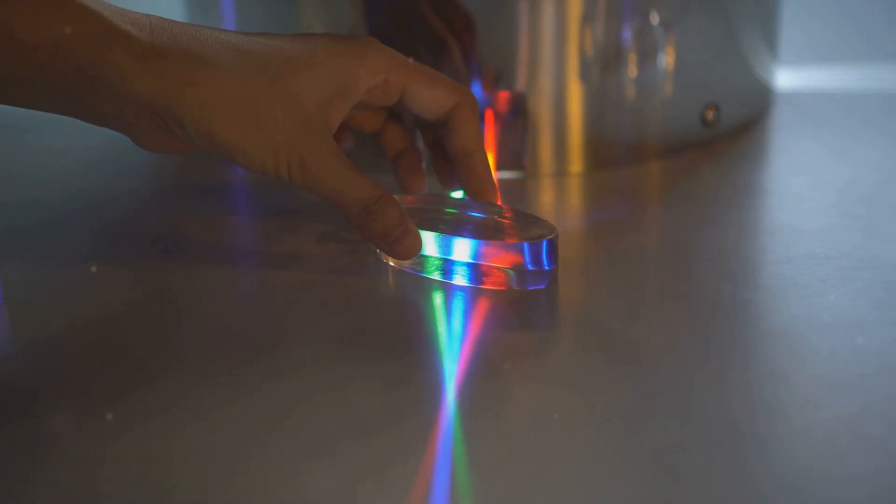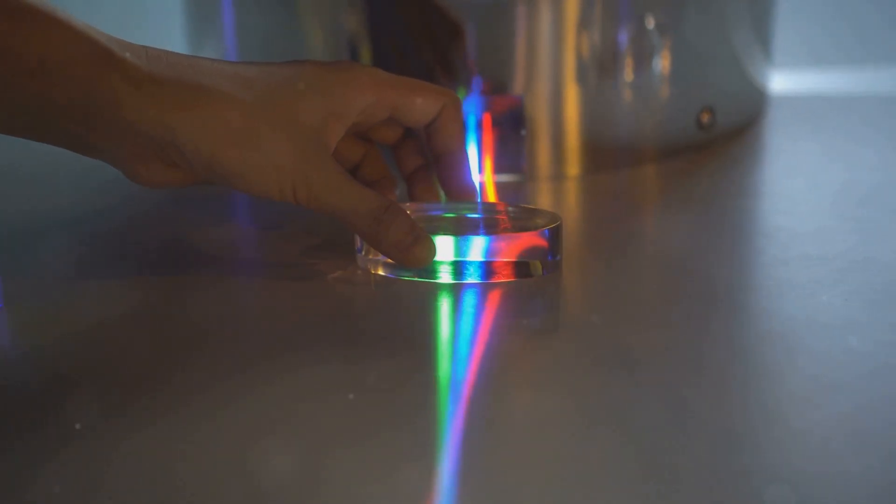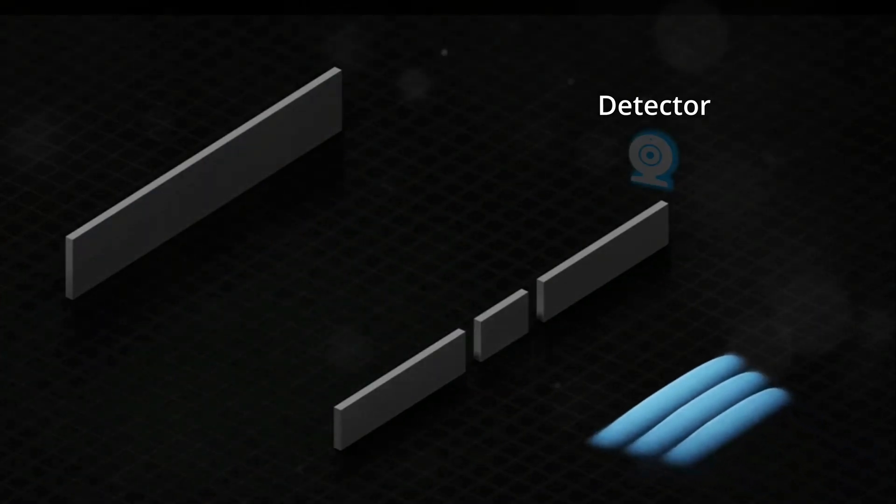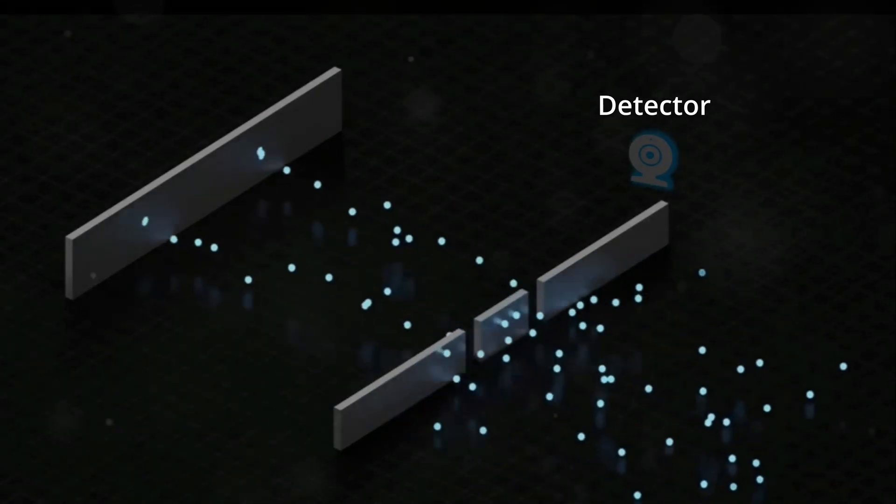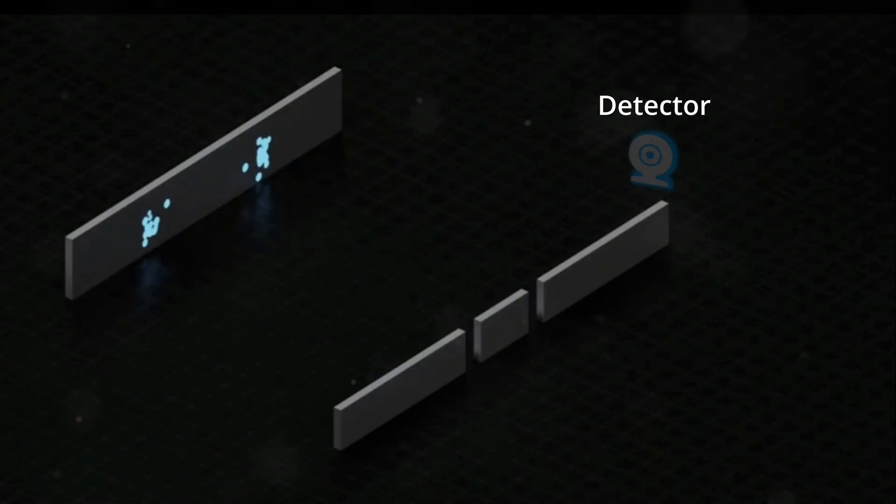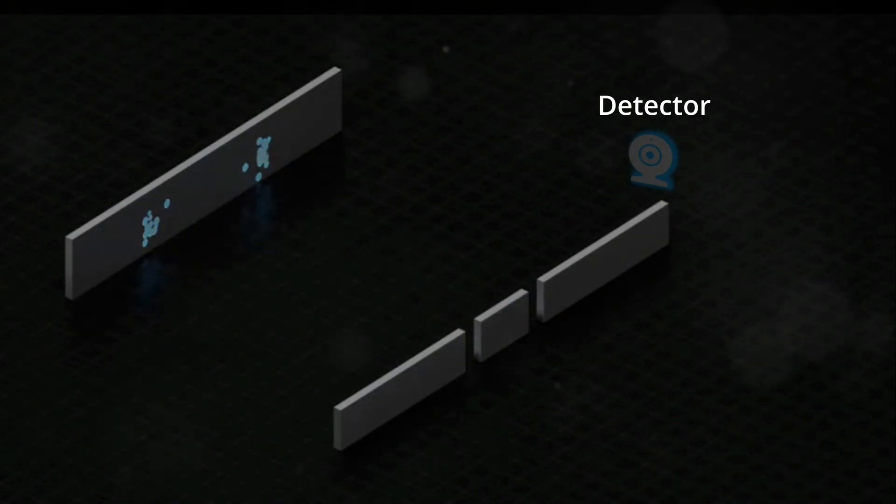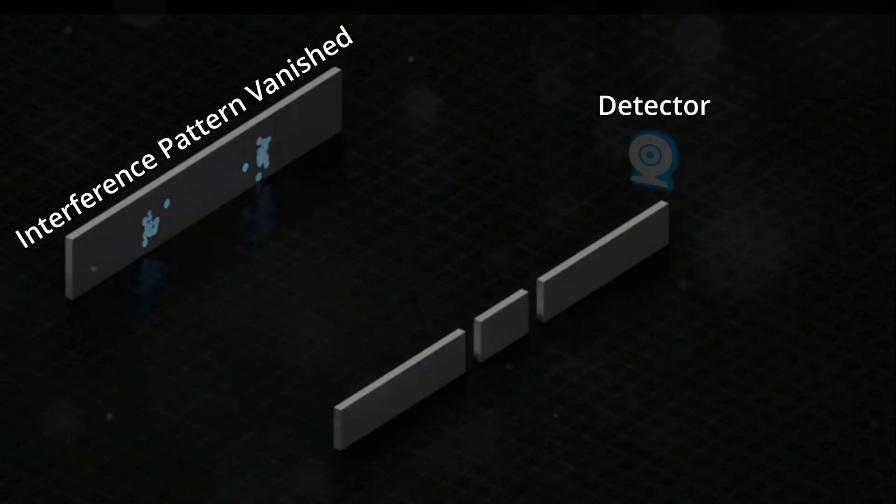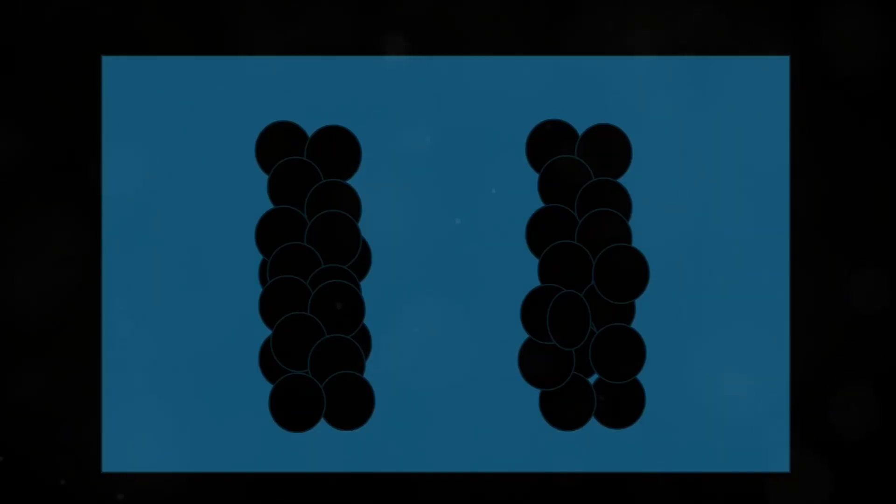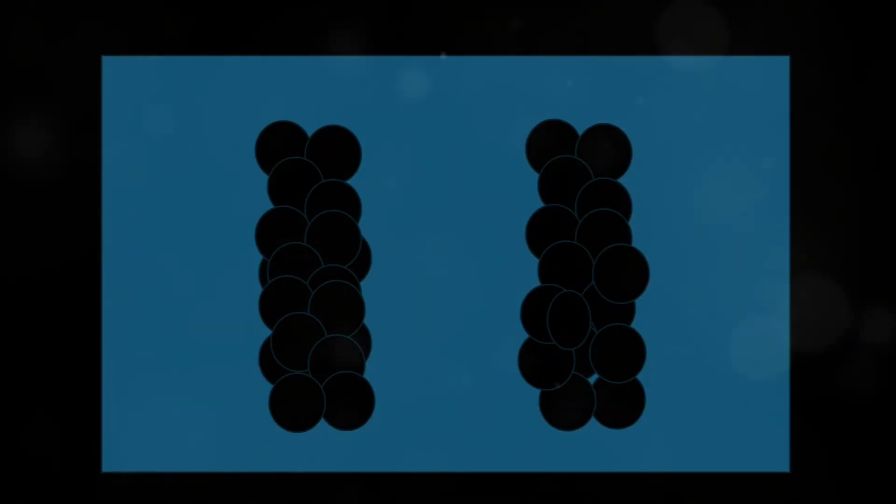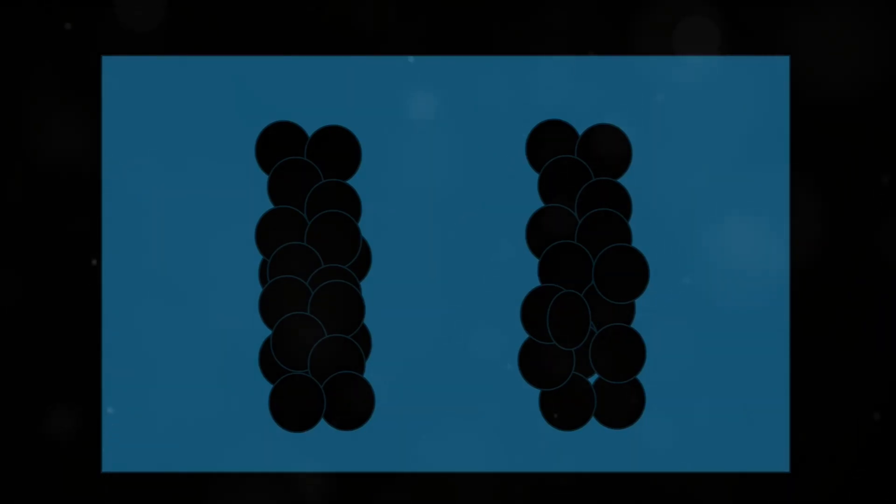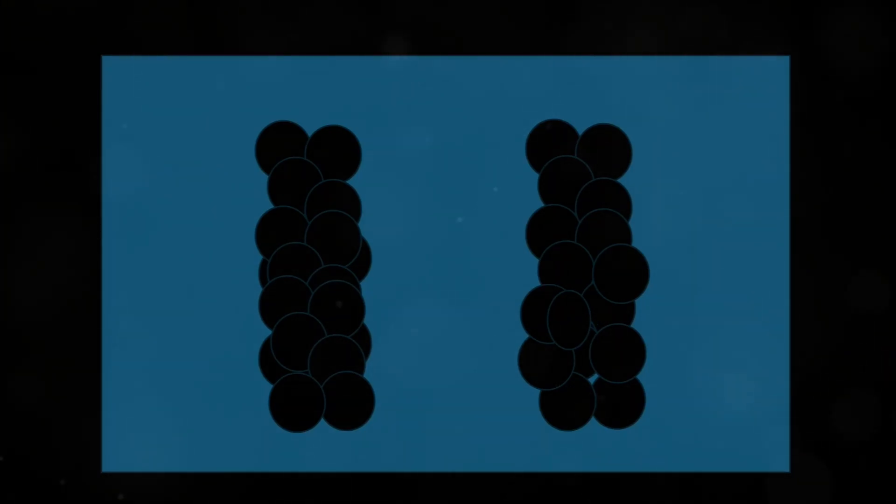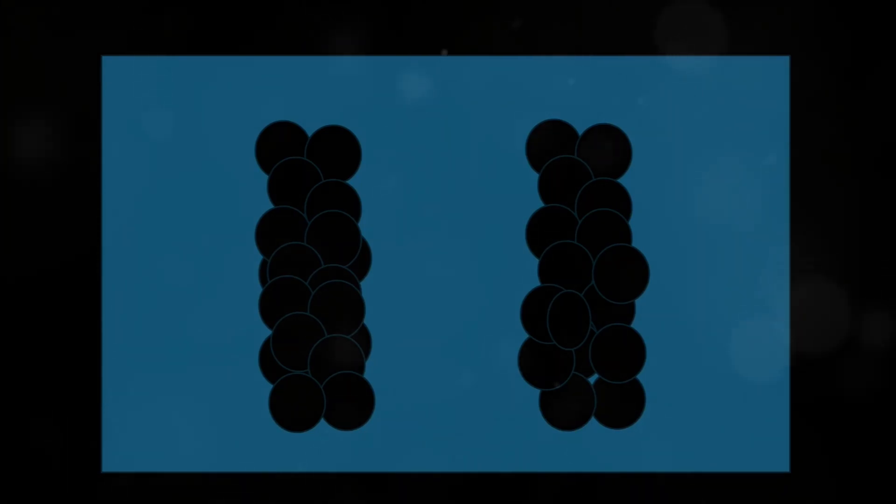They wondered, okay, light acts like a wave, but let's try to be even more precise. Let's try to see which opening each tiny bit of light, also known as photon, actually goes through. So they cleverly put detectors right next to the openings, basically watching to see the path of the light. And this is where things got truly strange again. The interference pattern vanished completely. Just by trying to watch which opening the light was going through, the light suddenly stopped acting like a wave. It went back to acting like particles and again made those two simple lines behind the openings, just like tennis balls would.